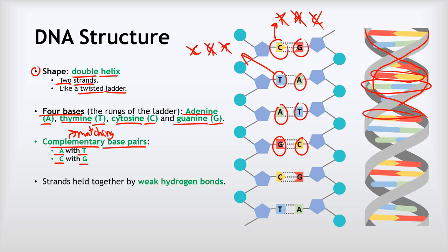Now the base pairing works because of hydrogen bonds. The two strands are held together by these weak types of bonds called hydrogen bonds. If you have a look at the diagram, the hydrogen bonds are represented by these dotted lines, and you can see that they've got different numbers of hydrogen bonds. C and G each have three hydrogen bonds, which is why they can pair up with each other. T and A have two hydrogen bonds, which is why they can pair up with each other. A can't pair with C because you've got different numbers of hydrogen bonds, so it doesn't work nicely.